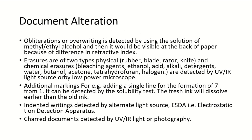Document alteration refers to changes made to a genuine document. Obliteration or overwriting is detected using a solution of methanol or ethanol; the written part becomes visible at the back of the paper due to differences in refractive index, allowing us to read what was written beneath the altered words. Erasers are of two types — physical (rubber, blade, razor, knife) and chemical (bleaching agents, ethanol, acid, alkali). These are detected by UV or IR light source or by low-power microscope.